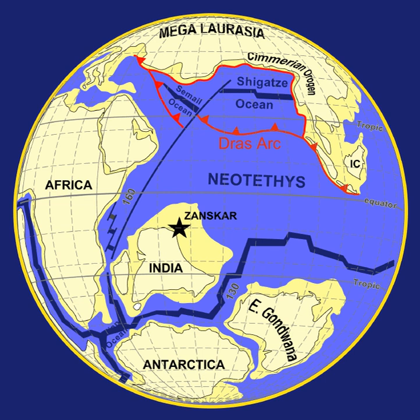The Phanerozoic eon is the current eon in the geologic timescale. It covers roughly 541 million years. During this period continents drifted about, eventually collecting into a single landmass known as Pangaea and then splitting up into the current continental landmasses. The Phanerozoic is divided into three eras: the Paleozoic, the Mesozoic and the Cenozoic. Most of biological evolution occurred during this time period.